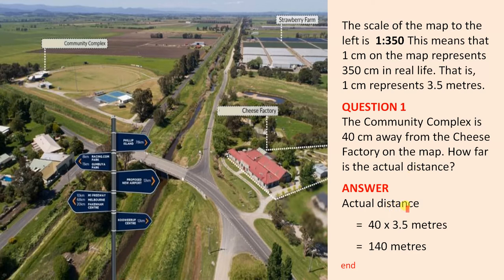Well, the actual distance is 40 x 3.5 m because 1 cm represents 3.5 m. So that is 140 m. So the community complex and the cheese factory are 140 m apart.